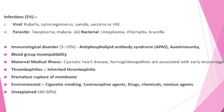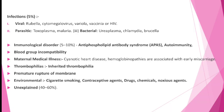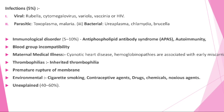Infection accounts for 5 percent of early pregnancy abortion. Viral causes include rubella, cytomegalovirus, varicella, and HIV. Parasitic causes include toxoplasma and malaria. Immunological factors account for 5 to 10 percent, including antiphospholipid antibody syndrome (APS), autoimmunity, blood group incompatibility. Maternal medical illness such as cyanotic heart disease and hemoglobinopathies are associated with early miscarriage.